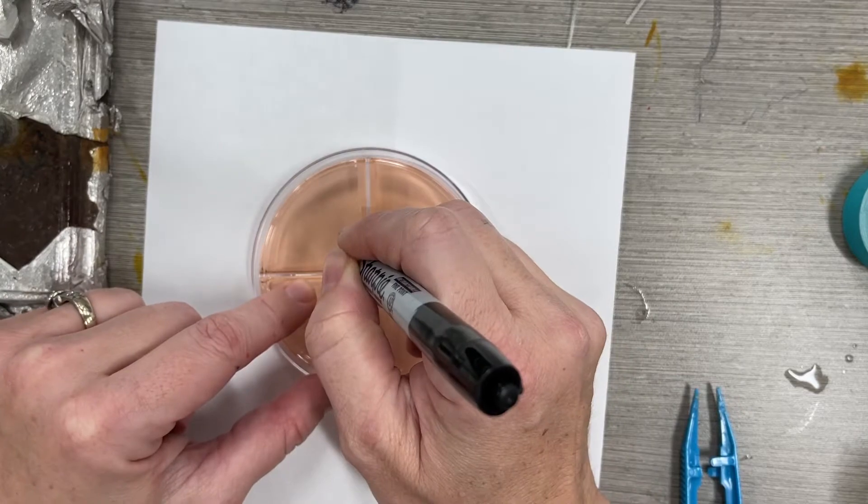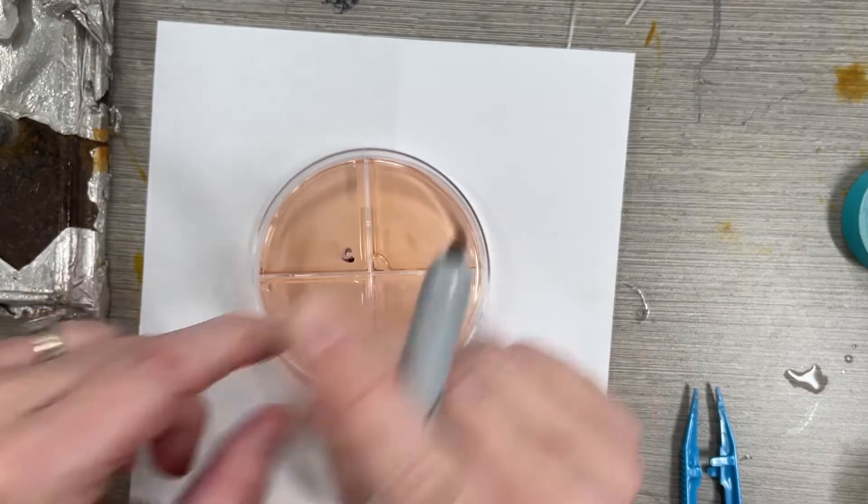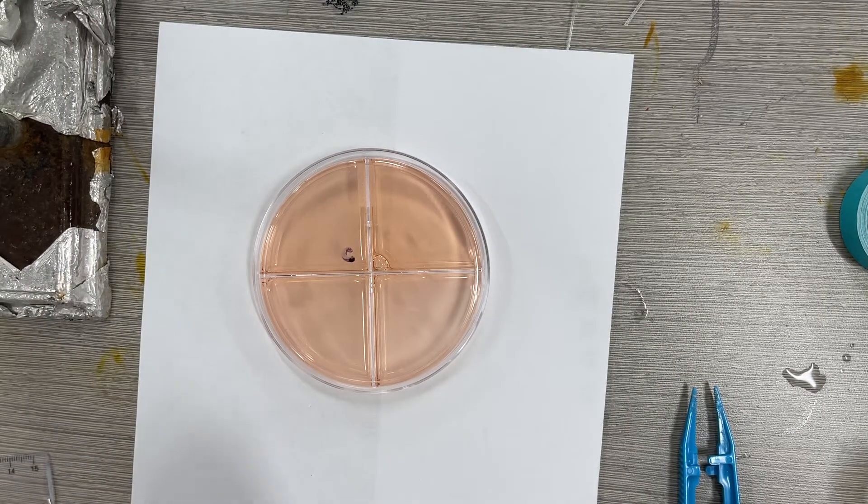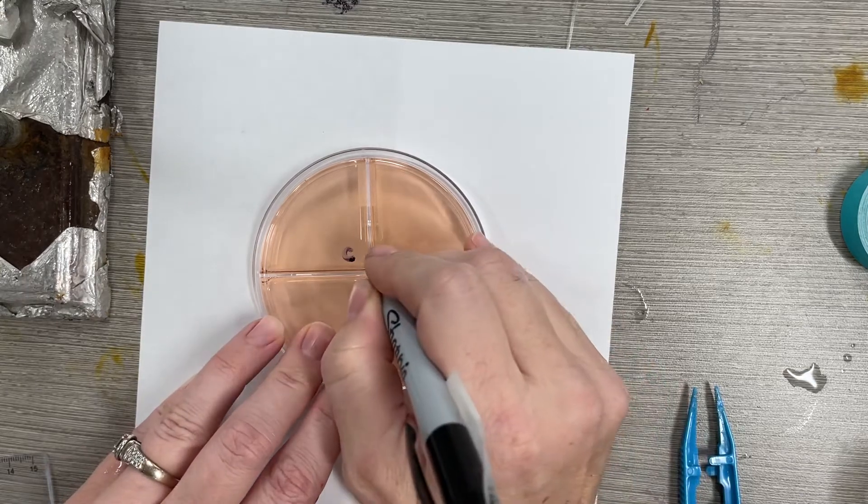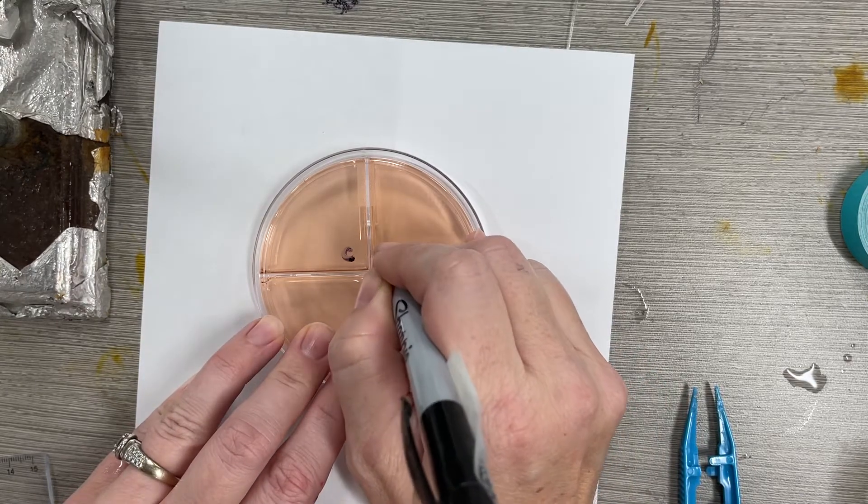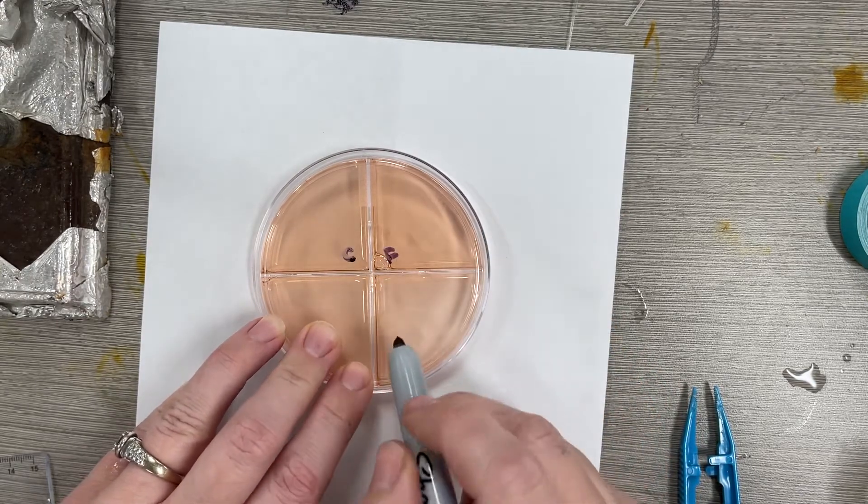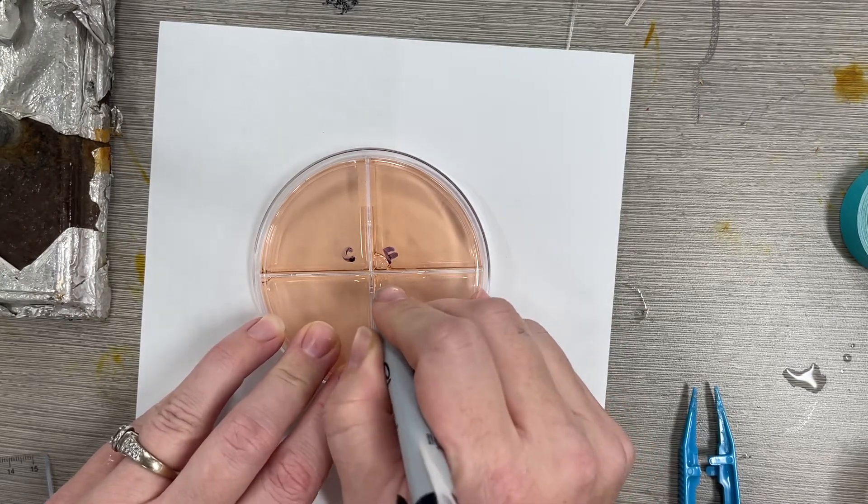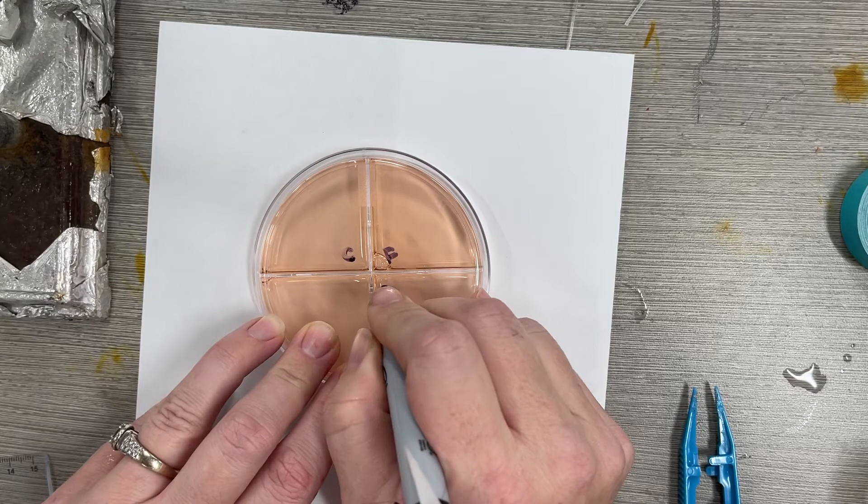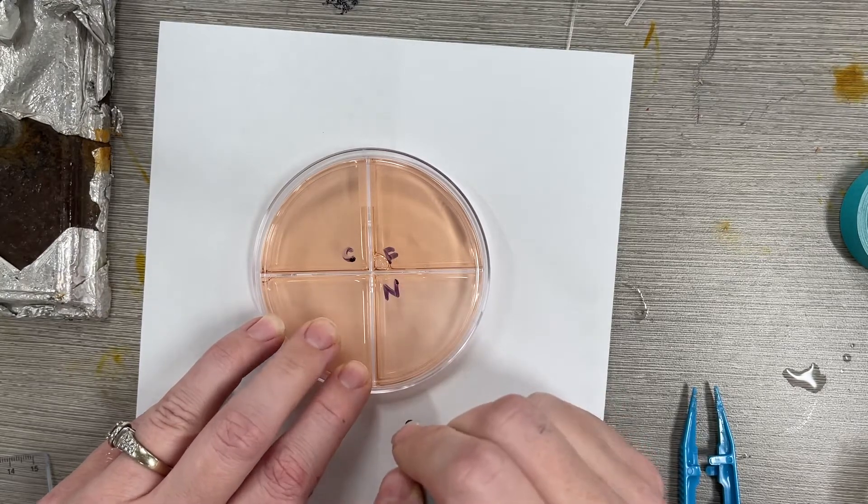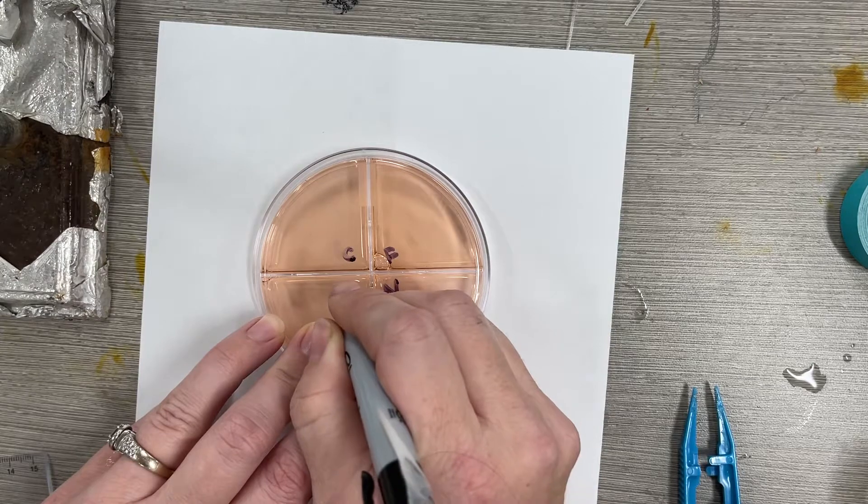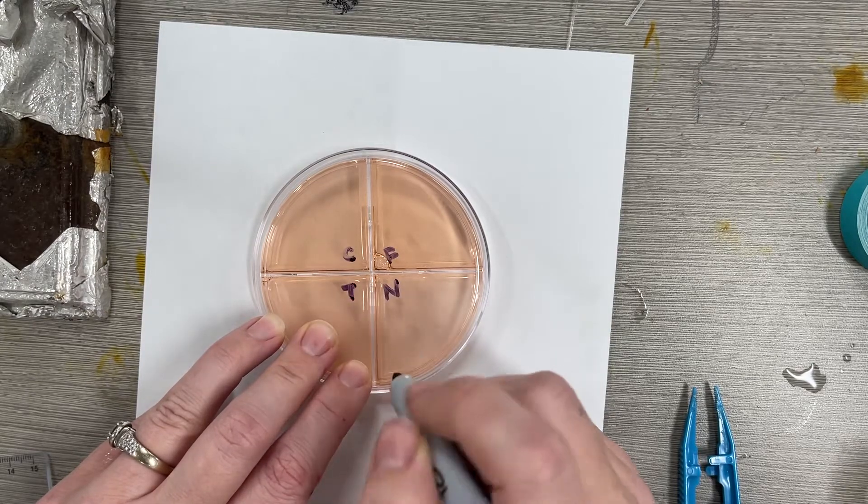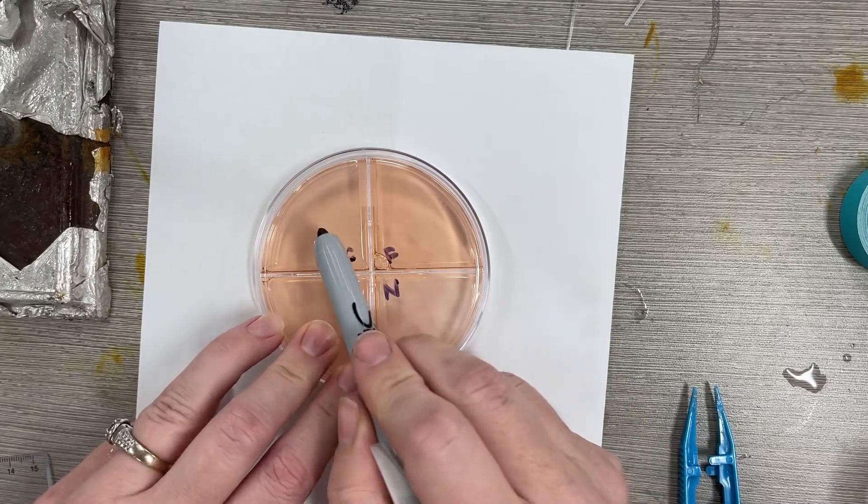This first quadrant is the control, so put a C for control. This quadrant will be my fresh pineapple, I'll put F there. This quadrant will be my canned, so I'll put an N. And my meat tenderizer is going to be right here, so I'll put a T.